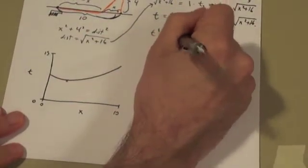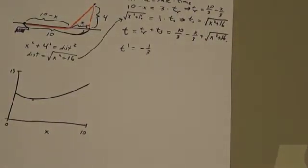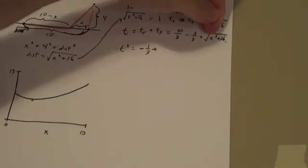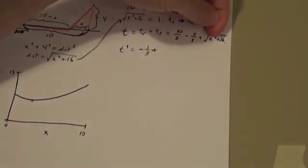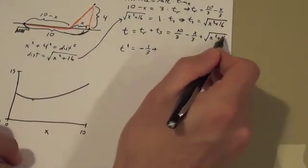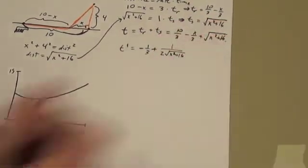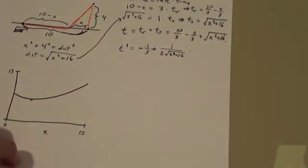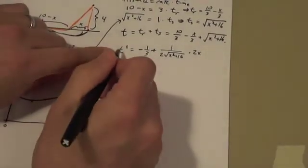First derivative of 10 over 3 is 0. First derivative of minus x over 3 is minus one third. And now we have to do the derivative of square root x squared plus 16. So for that we need the chain rule. We need to think about square root x squared plus 16 as x squared plus 16 is one object, the inside function, to the half power. And when we do that, we get one half x squared plus 16 to the minus half, which is this, one half, x squared plus 16 to the minus half, times the derivative of the inside function, the derivative of x squared plus 16, which is just 2x. So there we go. That's chain rule. Now we have to set this equal to zero.